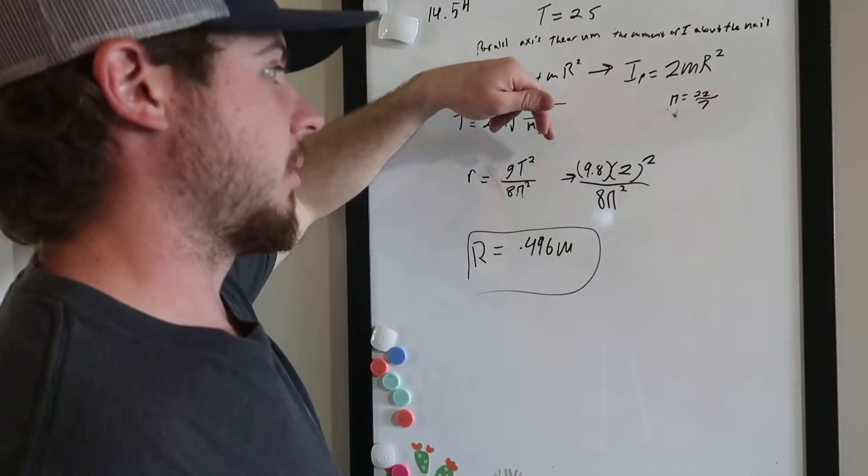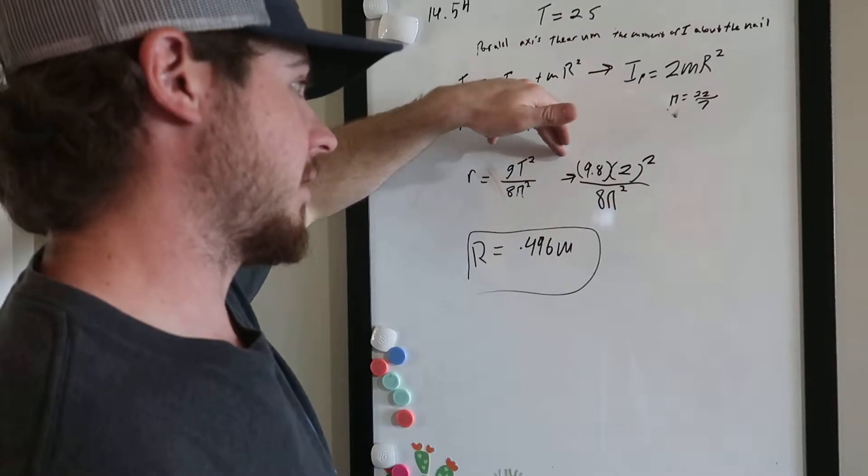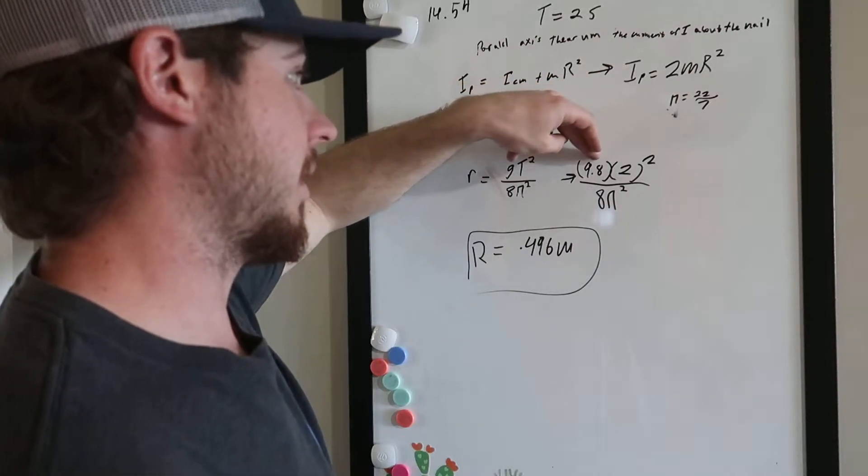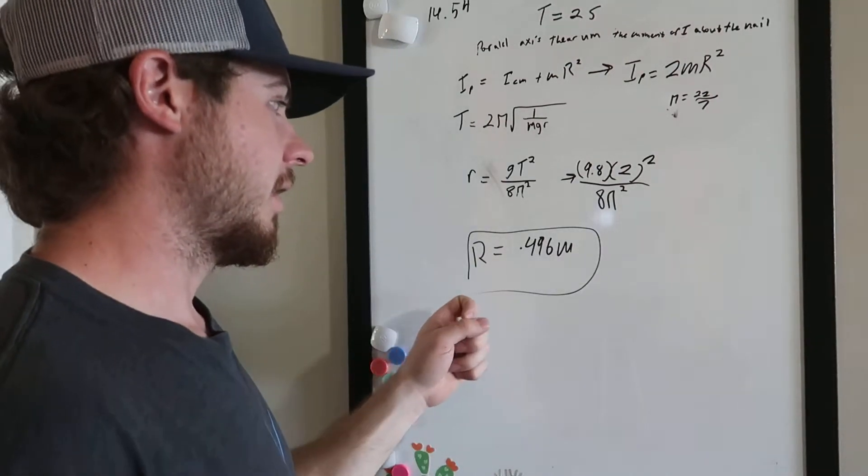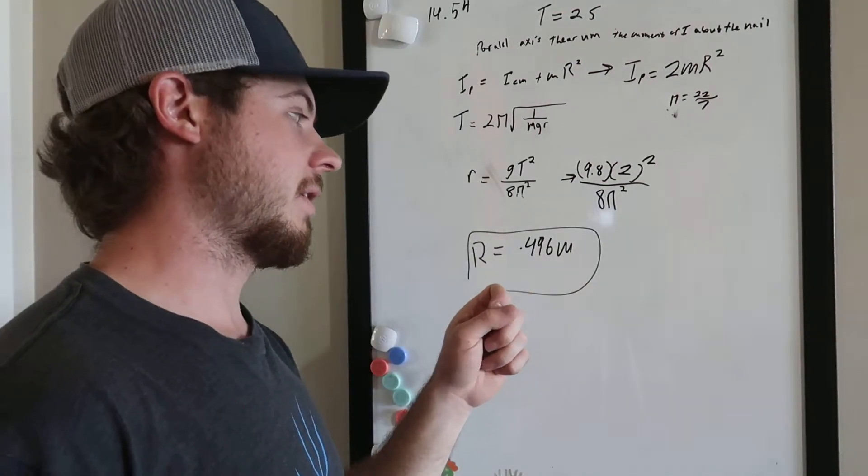And so when we fill that stuff in, 9.8 meters per second squared multiplied by two seconds squared over 8 pi squared, we get the radius is equal to 0.496 meters.